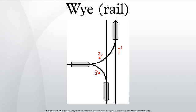A Y or triangular junction, in rail terminology, is a triangular-shaped arrangement of rail tracks with a switch or set of points at each corner.